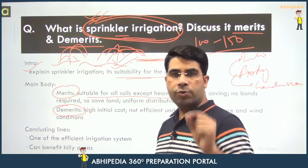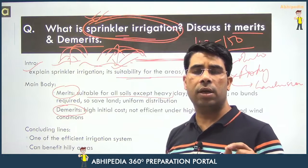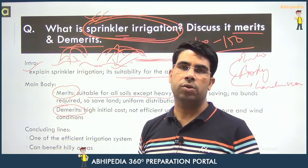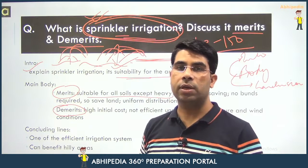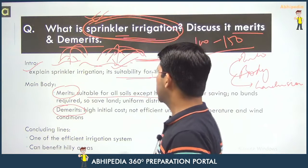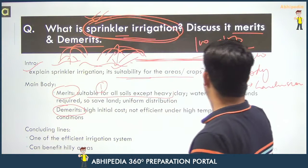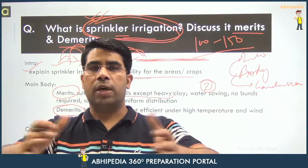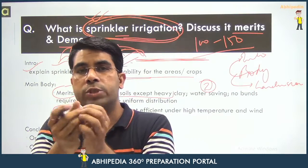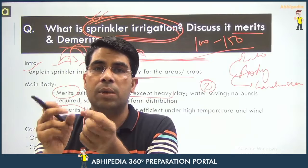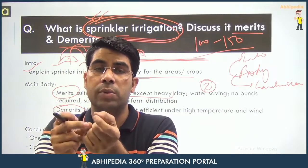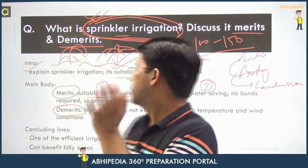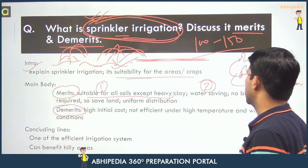First merit: it is suitable for all types of soil. The only exception is heavy clay soil, where water cannot percolate properly. Apart from that, it is suitable for almost every soil — so that is a good thing. Second merit: water is saved, because in conventional irrigation the water volume is high and you have to channelize it across the entire field, whereas here water is distributed relatively and uniformly through small pipes.